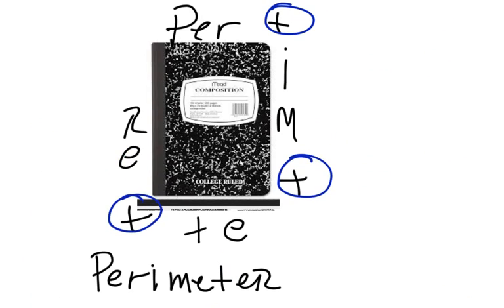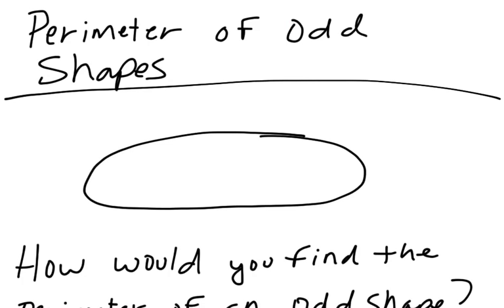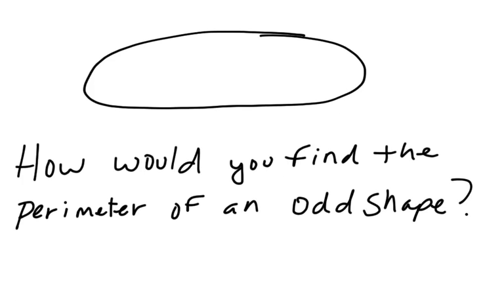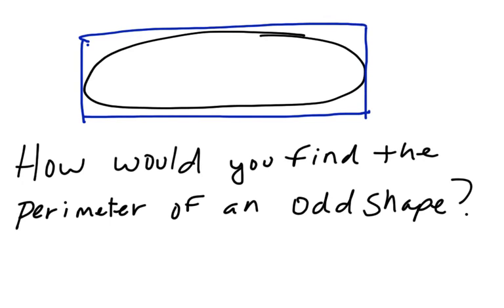And then the last thing that we're going to talk about is perimeter of an odd shape. And so how would you find a perimeter of an odd shape? Because, since this is an oval, one of the things that you can do to find a perimeter of an odd shape is take a known shape, like a rectangle, and then put it around it. And then you just have to pretty much just estimate the total size of that, or the total perimeter.